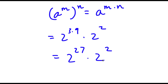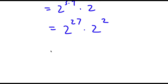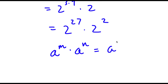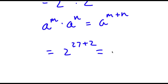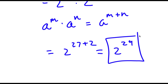Now what I'm going to do is solve this. If I have something in the form a to the power of m times a to the power of n, this is the same thing as a to the power of m plus n. So now 2 to the power of 27 times 2 to the power of 2 is going to equal 2 to the power of 27 plus 2. Now 27 plus 2 is going to equal 29, so now I have 2 to the power of 29. And this is my answer.